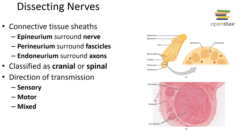The connective tissue sheaths surrounding nerves include the epineurium, which surrounds each nerve; the perineurium, which surrounds a fascicle or bundle of nerves; and the endoneurium, which surrounds the axon itself. The epineurium is the outer layer and the endoneurium is the deepest.